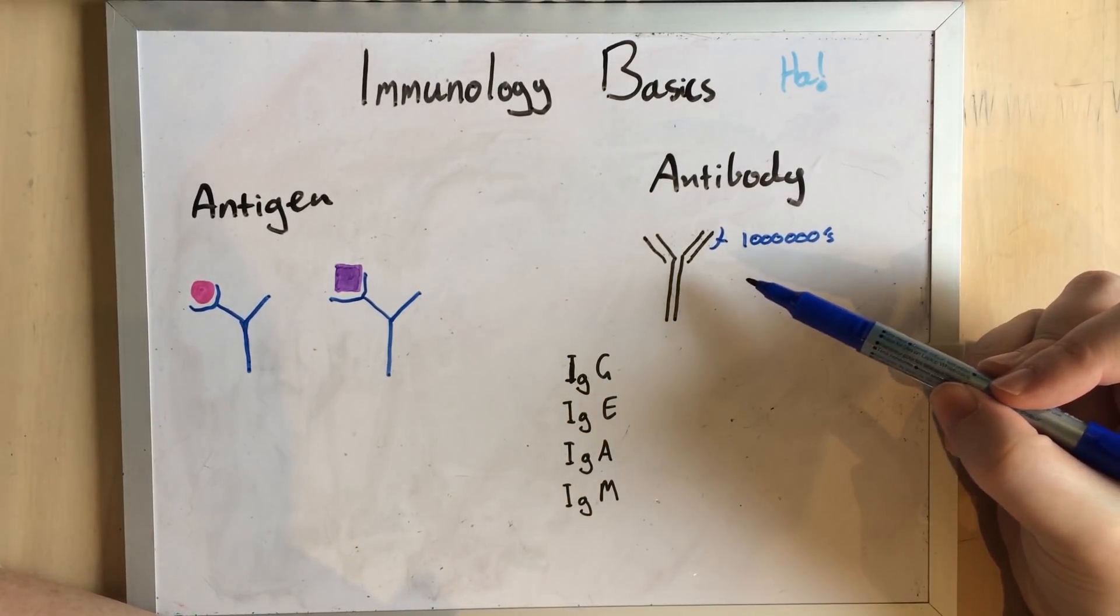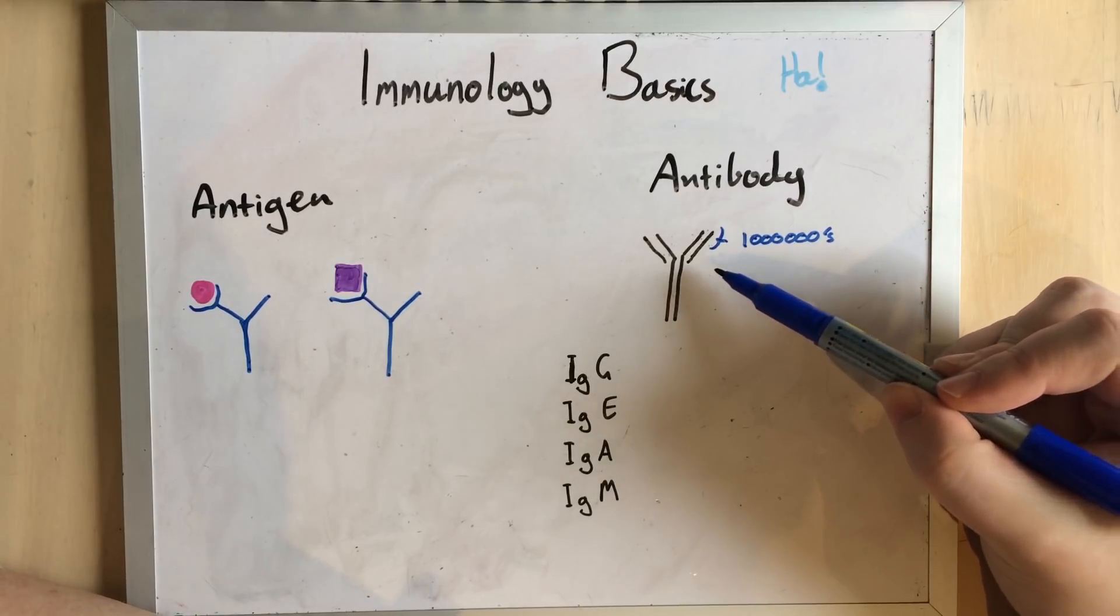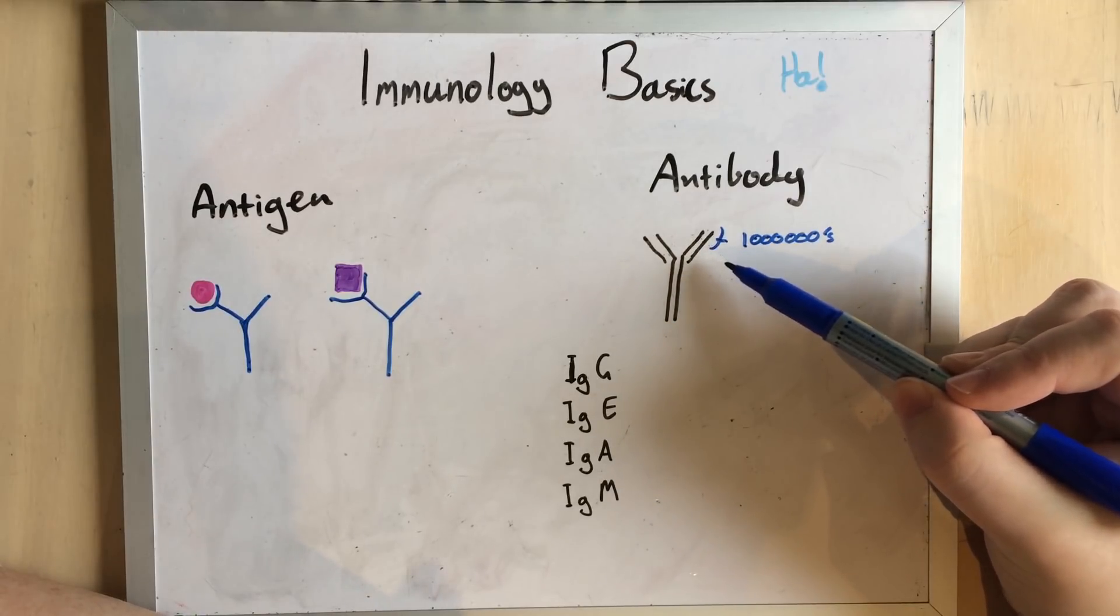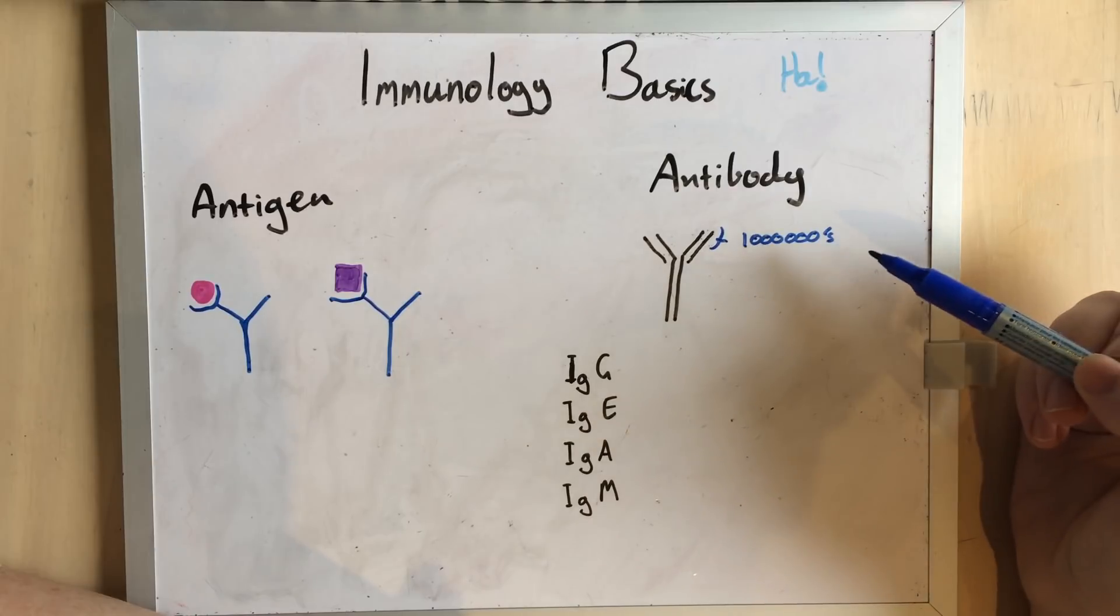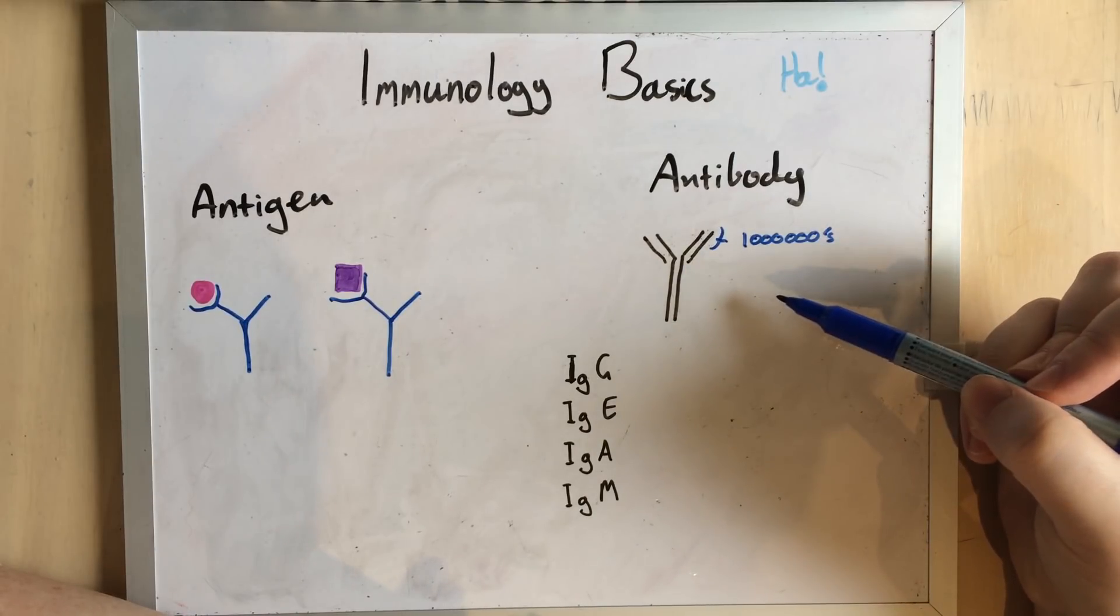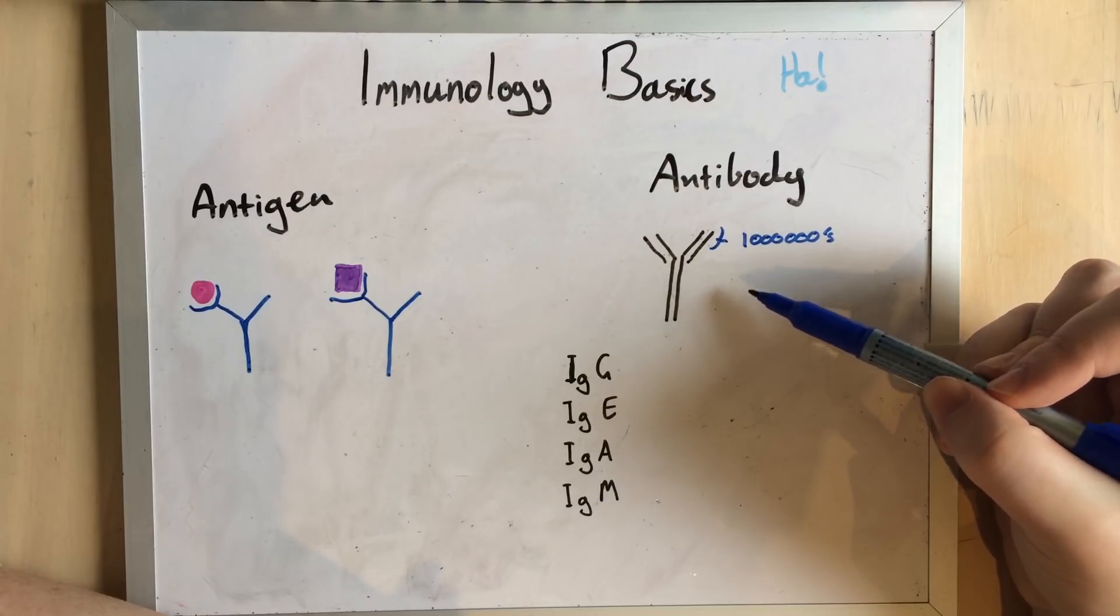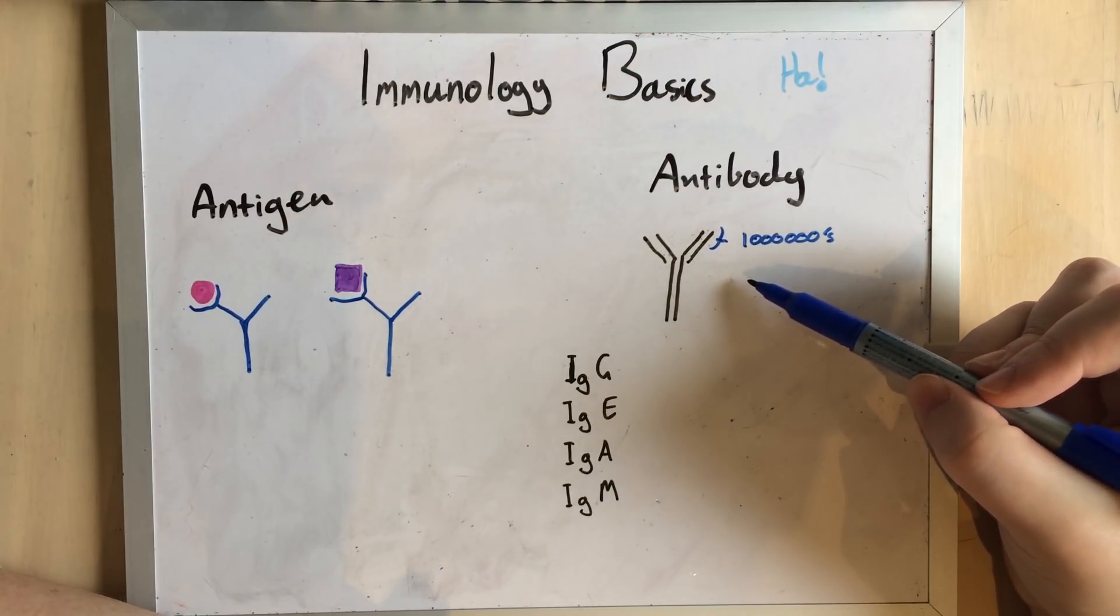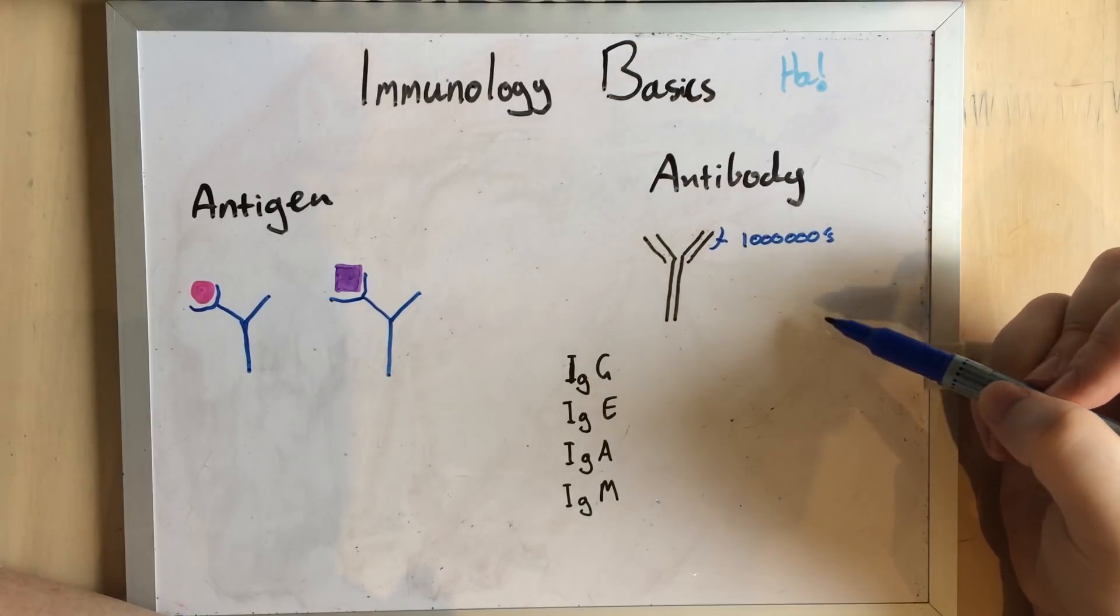Now, occasionally you will get basically an accident where an antibody is generated that will bond to normal natural proteins in the body. Usually there are regulatory systems to try to suppress this from happening, but when it does happen and it gets through, this is how you get immune-mediated disease.